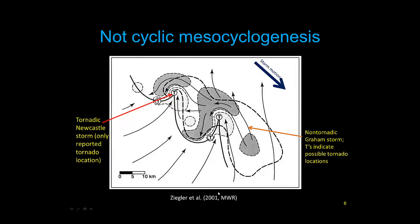In this next example, we're looking at a fairly famous case from the first Vortex that Conrad Ziegler published in the Monthly Weather Review — the so-called Graham-Newcastle storms. Storm motion is to the southeast. This is a conceptual rendering, with a dashed line outlining the broad reflectivity. You can see one supercell to the southeast and another to the northwest with a hook. The T's represent potential tornado locations. The only tornado in this case was with the northwestern supercell in the classical position. This wasn't cyclic tornado genesis — just two supercells very close together. It's not always the rear one that produces tornadoes.